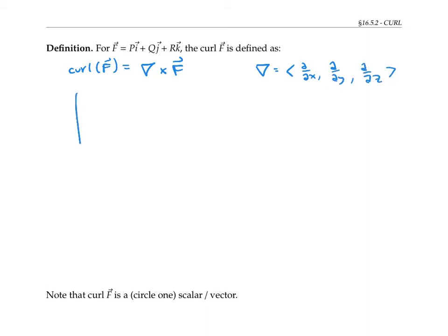So if we take the cross product, we write out d/dx, d/dy, d/dz, and then the components of our vector F.